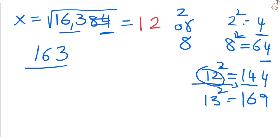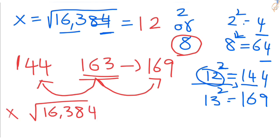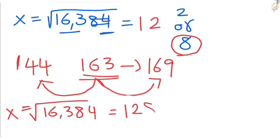Now find the unit digit. 163 lies between 144 and 169. If 163 is closest to the smaller number, your unit digit will be the smaller number. If closest to the bigger number, your unit digit will be the bigger number. In this case, 163 is closer to the bigger number, so take 8. The square root of 16,384 is 128. The x value is 128.